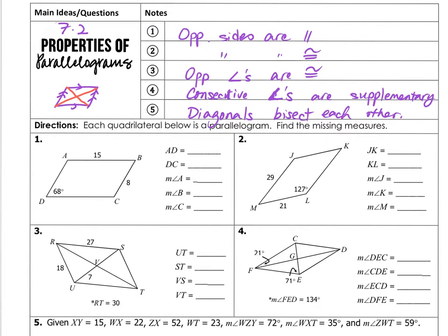Let's look at some examples. Here I have a parallelogram ABCD. It's asking for the length of AD. AD is opposite of BC, so BC is 8, AD must be 8, and DC must be the same as AB at 15.